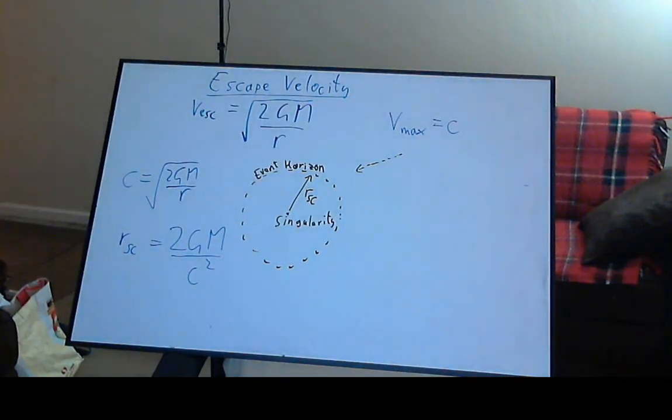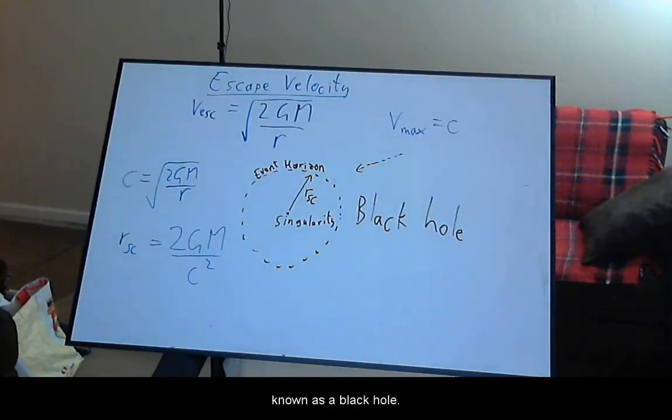This radius is referred to as the Schwarzschild radius for the mass, and predicts the event horizon around infinitely dense masses known as singularities for a combined object known as a black hole.